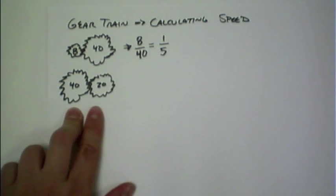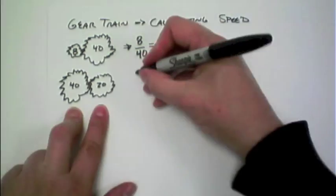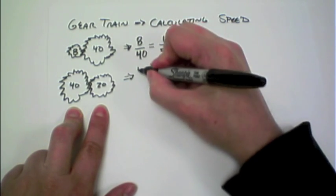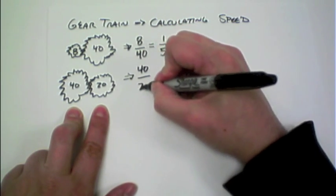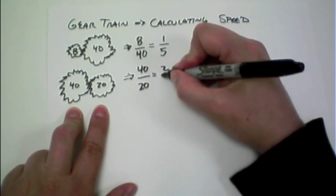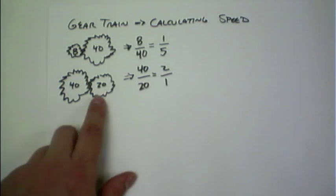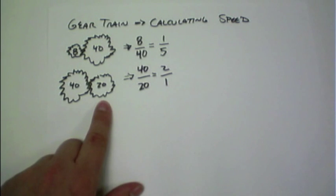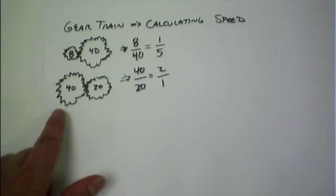Similarly, we looked at the 40-tooth gear compared to the 20-tooth. I can do the same relationship, and 40 over 20 comes out to a 2 to 1, which means that the 20-tooth will move twice for every one rotation of the 40.